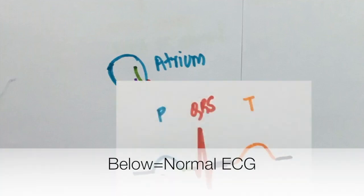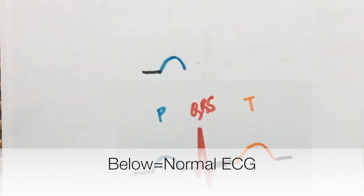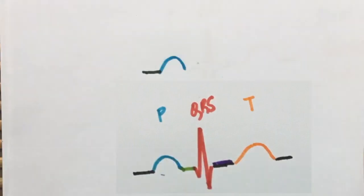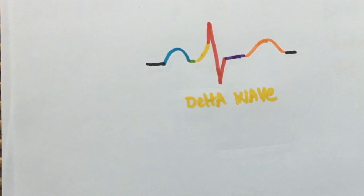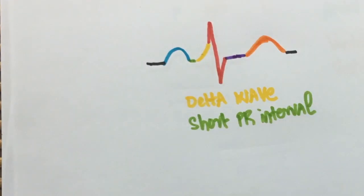Having understood that, let's see what the ECG looks like. The atria are contracting normally so the P wave is normal. Since there is an accessory pathway and no delay at the AV node, the ventricles get depolarized quicker than usual. So this gives rise to a delta wave right here. The other waves will be normal. Since the time between atrial contraction and ventricular contraction is low, the PR interval will be short in Wolf-Parkinson-White syndrome.